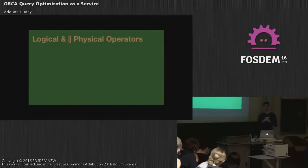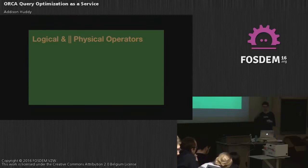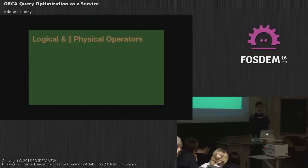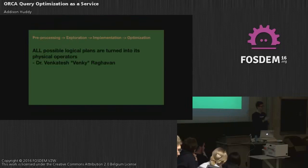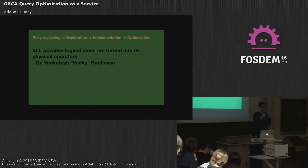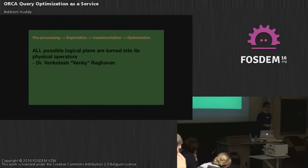Before I go further: the difference between a logical operator and a physical operator in a database — this is really important to understanding how Orca works. A logical operator is something like 'join' — that's just the logical way of thinking about what needs to happen to the data. The physical operator is the algorithm that actually makes that operation happen in the database. So join is the logical operator; hash join is the algorithm that implements it. A lot of databases go through pre-processing of the logical representation of the query plan, then take one logical query plan and turn it into a physical implementation, picking the best cost from that grouping.